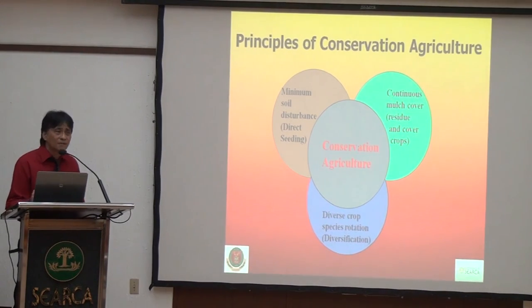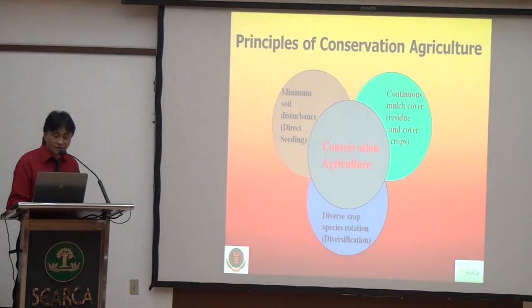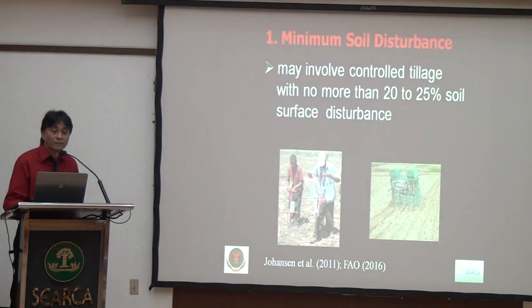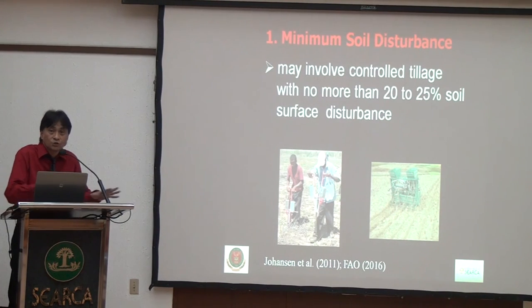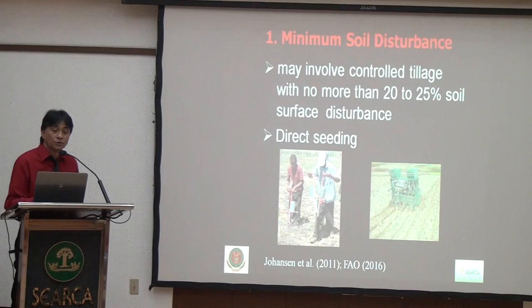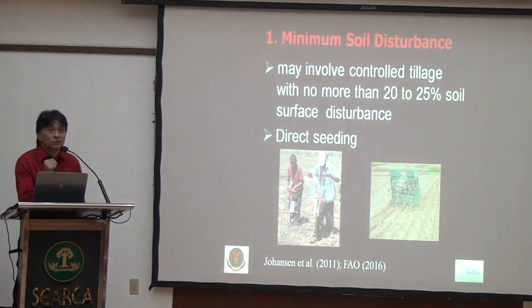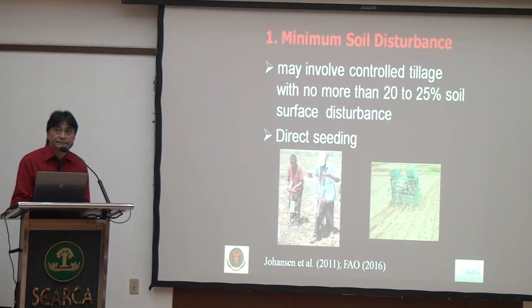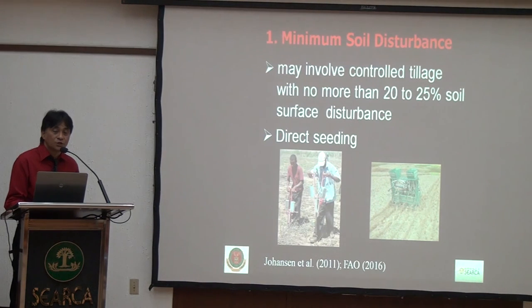How minimal is minimal? According to the literature, no more than 20 to 25 percent of the soil surface should be disturbed — up to one fourth of the soil surface can be disturbed, but not more than that. If you do it that way, it passes the requirement for conservation agriculture. During planting, you have to do direct seeding. For small-scale systems, you can employ dippers; for medium scale, you can employ jab planters; and for large scale, you can employ mechanized direct seeders.